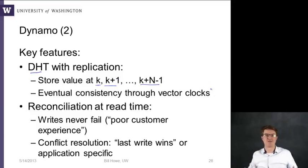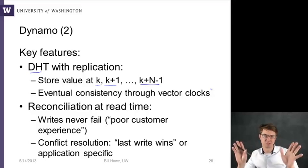Reconciliation of potential conflicts when things are being read and written happens at read time, which is another interesting feature of Dynamo. So writes never fail. And they cite in the paper that the reason for this is poor customer experience. So if you're building a web application where you update your status on some social networking site, and it comes back with an error message and says, sorry, couldn't commit, you know, somebody else was editing the same status. Their claim is that that's more disruptive than getting the wrong read, which seems reasonable to me.